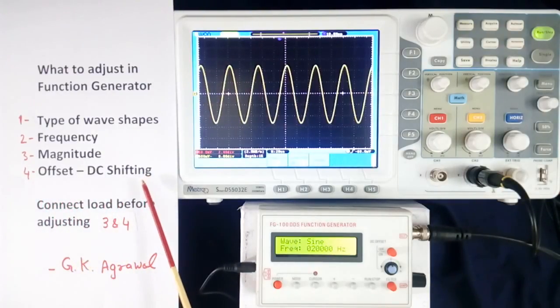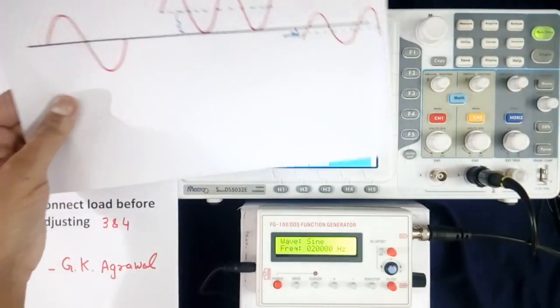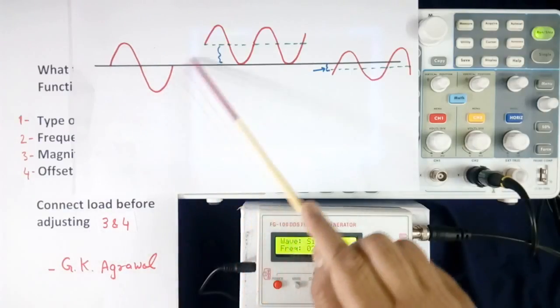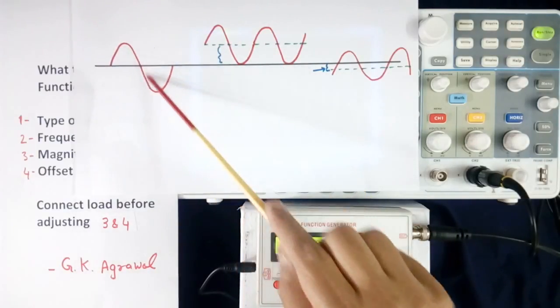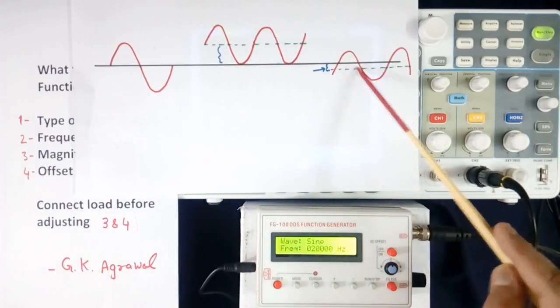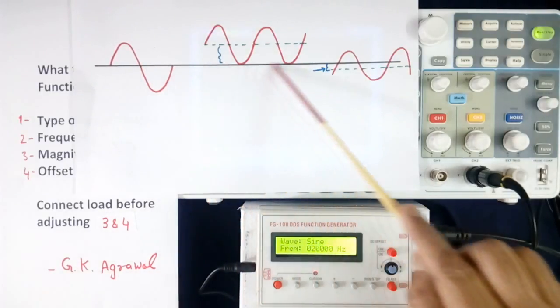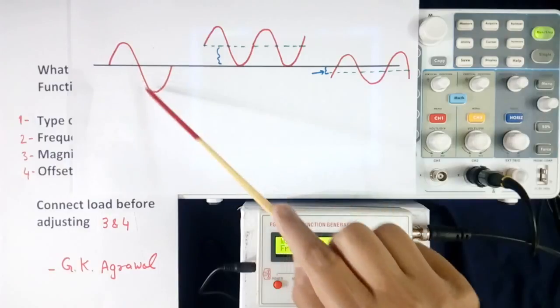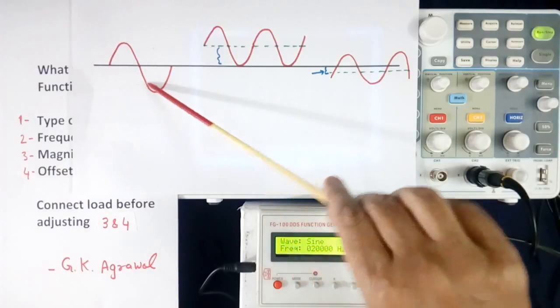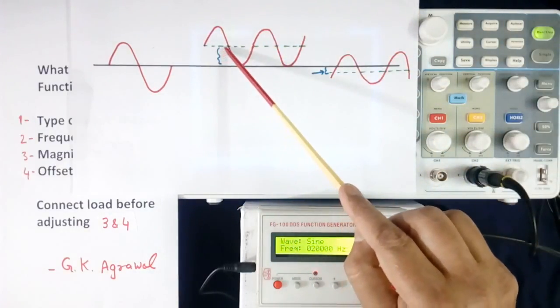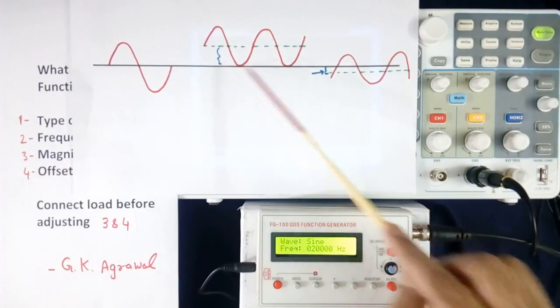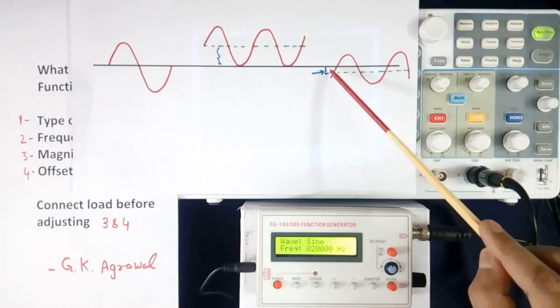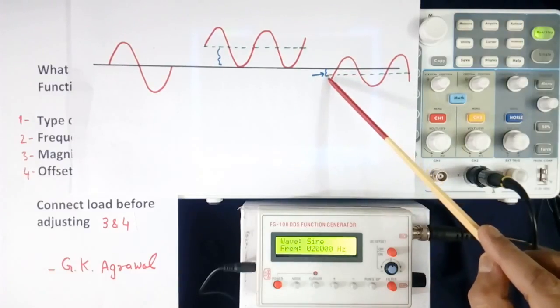Now last point is offset. What is DC shifting? See we have 3 wave shapes here, sine wave here also, here also, here also. And this black line is zero bold line. So this is zero offset. When this sine wave shift upward, then this becomes positive offset. If you bring this sine wave down like here, then this is negative offset.